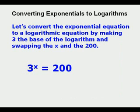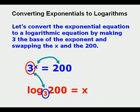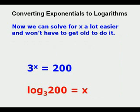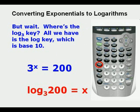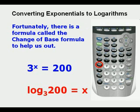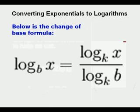Let's convert the exponential equation below to a logarithm equation by making 3 the base of the logarithm and swapping the x and the 200. So log base 3 of 200 equals x. And so we can solve for x a lot easier. But if we look at our graphing calculator, where is the log base 3 key? All we have is the log key, which is base 10. Fortunately, there's something called a change of base formula to help us out.